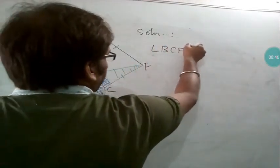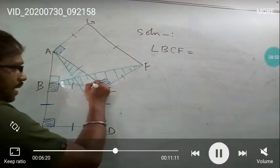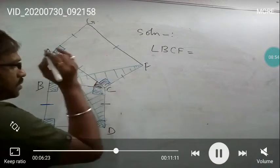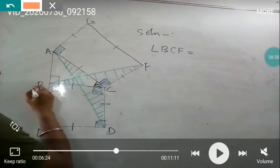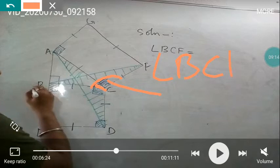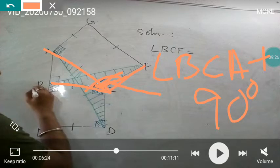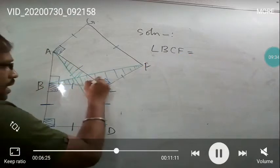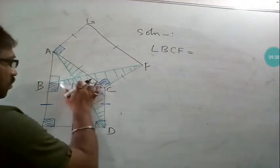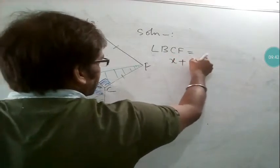Now, angle BCF: this angle BCF is equal to the sum of angle X plus 90 degrees. That is the total angle here — this is BCF, which equals angle X plus 90 degrees. So I will write: angle BCF = X + 90°. That is the part of triangle BCF.